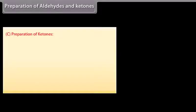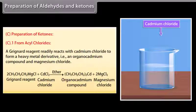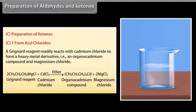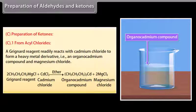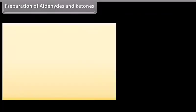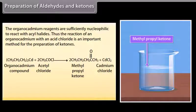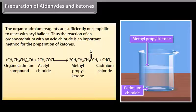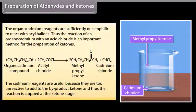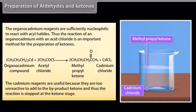Preparation of ketones from acyl chlorides: a Grignard reagent readily reacts with cadmium chloride to form an organocadmium compound and magnesium chloride. Organocadmium reagents are sufficiently nucleophilic to react with acyl halides. The reaction of an organocadmium reagent with an acid chloride is an important method for preparing ketones, as cadmium reagents are too unreactive to add to the ketone product, stopping the reaction at the ketone stage.